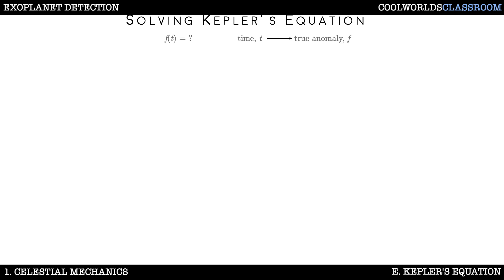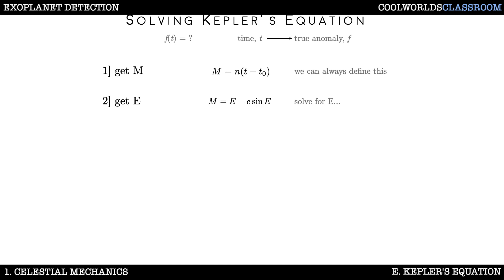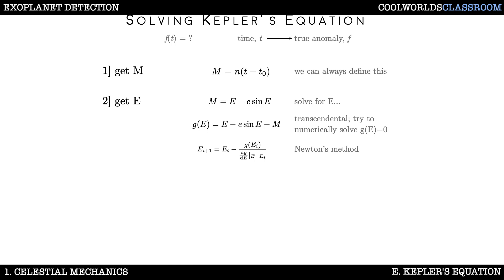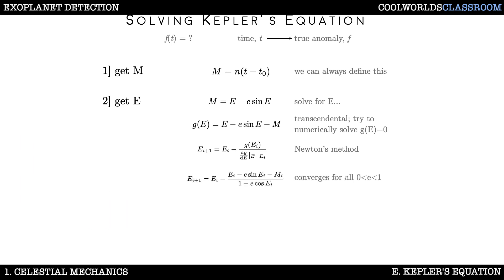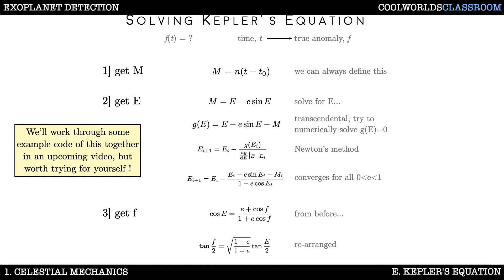We can now present a recipe for turning times into true anomalies — extremely valuable when modeling exoplanet orbits, sitting inside almost all detection codes and software. Step one: define mean anomaly M as a simple linear function of time. Step two: relate M to eccentric anomaly E to solve for E — this equation is transcendental so we can't solve it analytically; a popular numerical approach is Newton's method, which gives a recursive formula that converges very quickly. Step three: convert eccentric anomalies to true anomalies using the geometrical relationship, typically via a more elegant equivalent expression. We'll go over real computer code to do this soon.